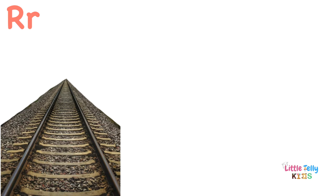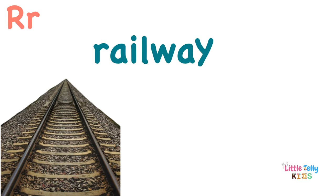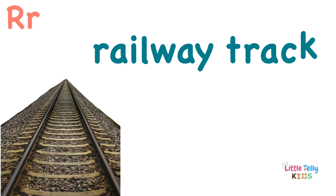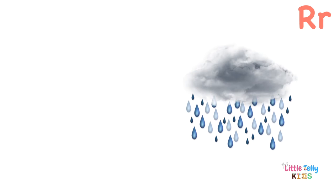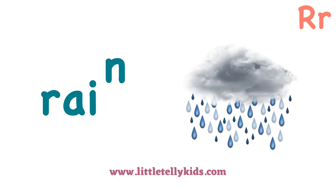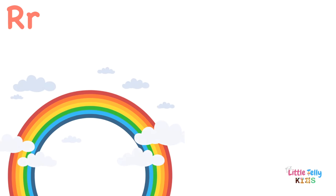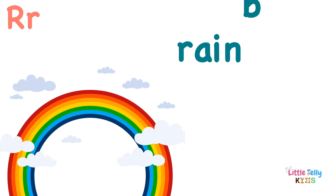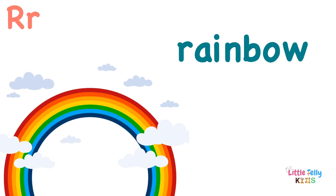Railway track. R-A-I-L-W-A-Y T-R-A-C-K. Railway track. Rain. R-A-I-N. Rain. Rainbow. R-A-I-N-B-O-W. Rainbow.